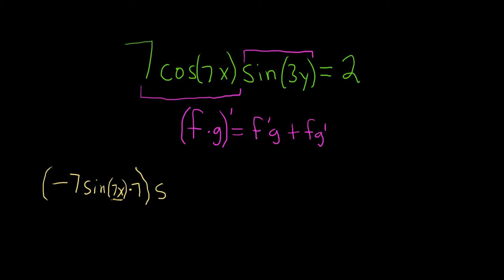This is the derivative of the first times the second, so sine of 3y, plus the first, simply 7 cosine 7x, times the derivative of the second. The derivative of sine is cosine, this will be cosine of 3y times the derivative of the inside. This will just be 3 and the derivative of y with respect to x, that's just dy/dx. This is equal to 0 because the derivative of 2 is 0.